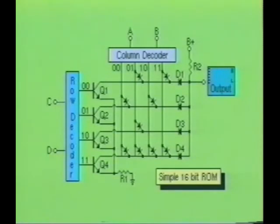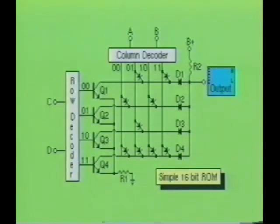To understand how the read-only memory device works, we will examine this simple circuit diagram of a 16-bit ROM, which uses diode elements. At first glance, this circuit may look somewhat complicated, but in reality its operation is very simple. There are two decoder circuits used in this ROM device — one for the columns and one for the rows. The control circuitry is designed to read one row at a time and one column at a time for each row.